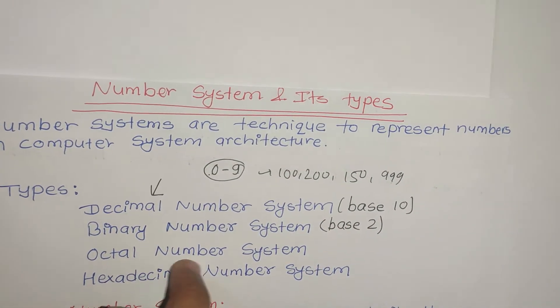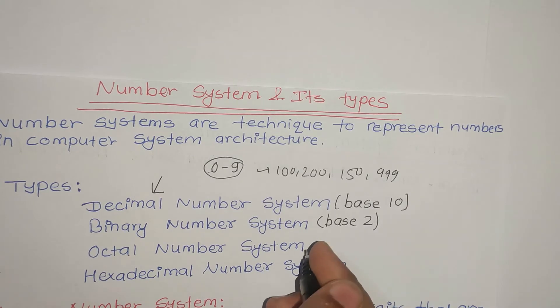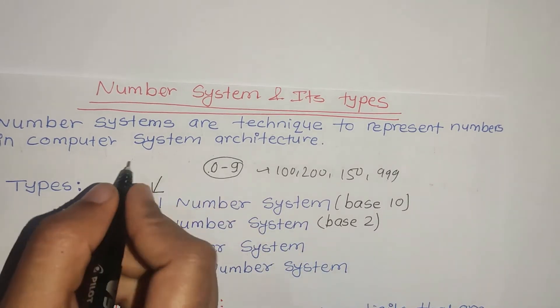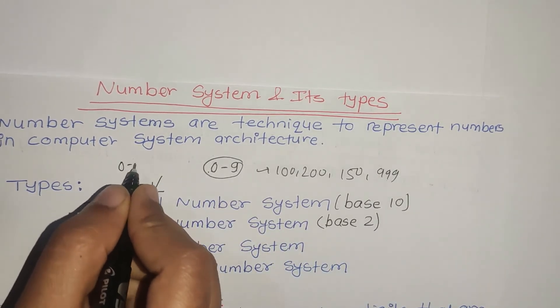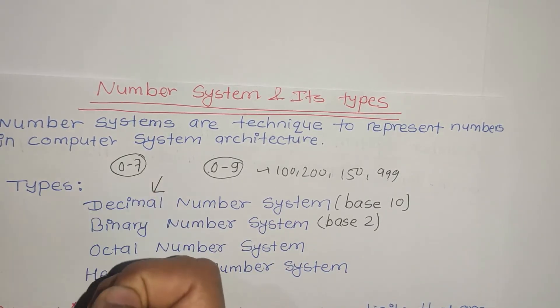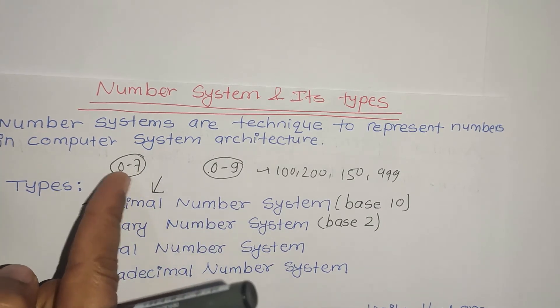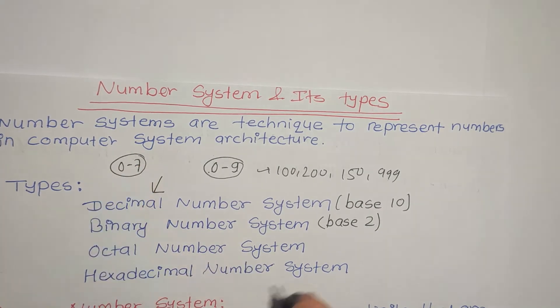In the case of the octal number system, you use the digits 0 to 7, which gives 8 digits.